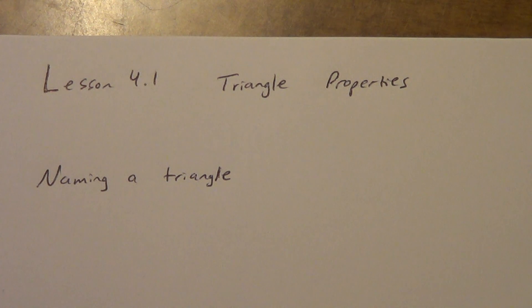And then the second one, we're going to look at a couple theorems. So first thing you need to know how to do is to name a triangle. Now you should obviously know, I hope you know this, but a triangle is a polygon with three sides. We talked about that in an earlier lesson.